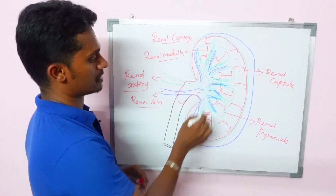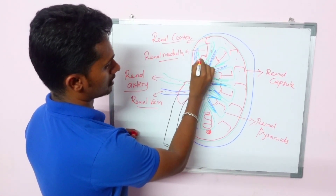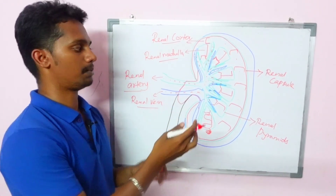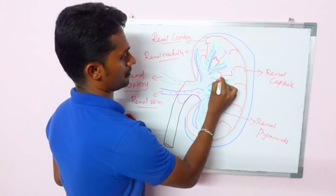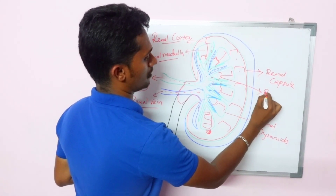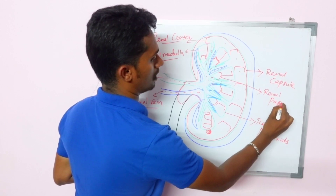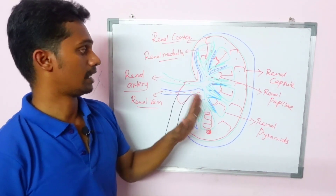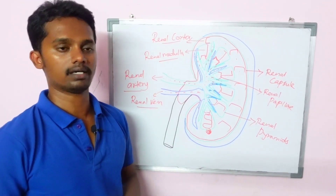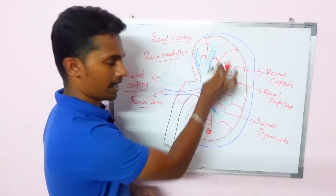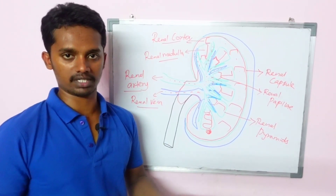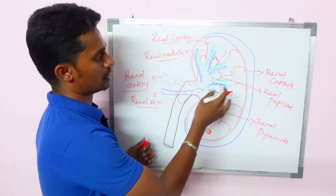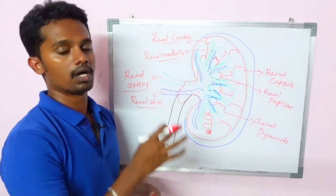This is the renal pyramid. On the renal pyramid, you can see a marking — a pointed tip. What is this? This is called the renal papilla. What is the renal papilla? Here is where the nephron collects urine. Here is urine formation, and where the urine goes — that is the renal papilla. The urine passes through the renal papilla.